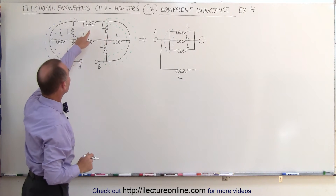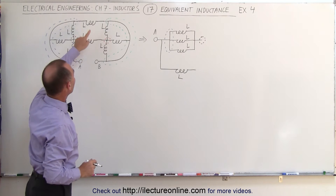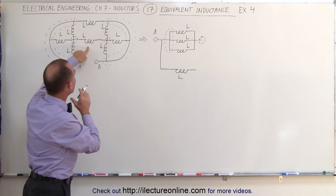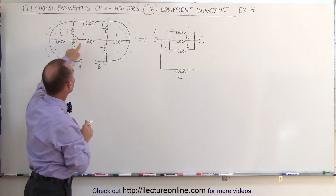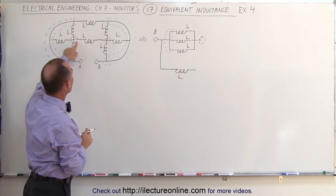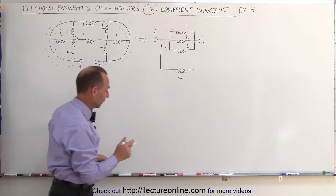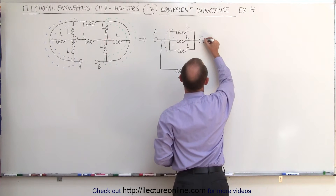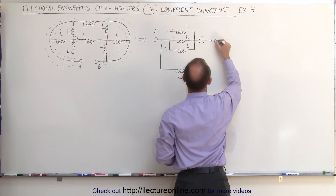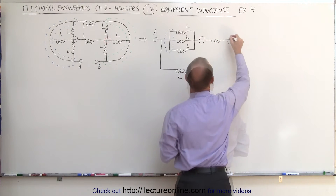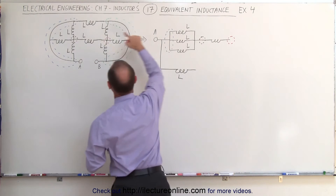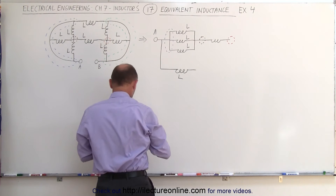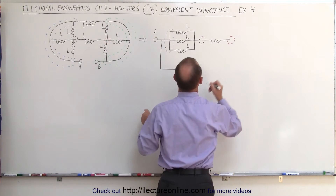Notice that inductor is parallel to this one. Now, let's continue going from the brown to the red. From the brown to the red, we have a single inductor. So this inductor here is the same as this inductor right there — that inductor is L.